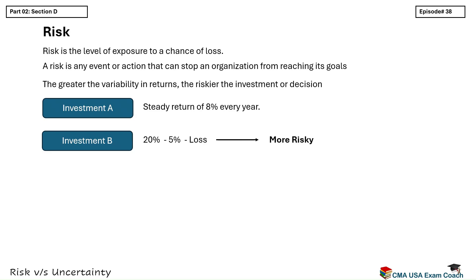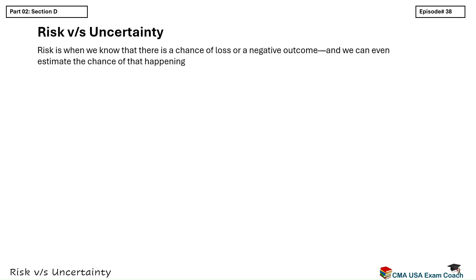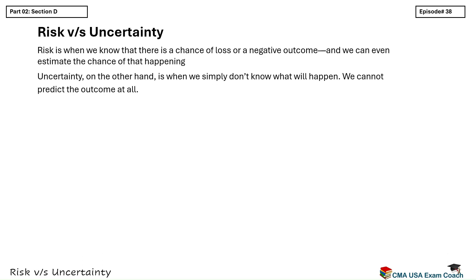Now that we understand what risk means, let's talk about something closely related but not exactly the same — called uncertainty. Many students think risk and uncertainty are the same, but they're not. Risk is when we know that there is a chance of loss or a negative outcome, and we can even estimate the chance of that happening. Uncertainty, on the other hand, is when we simply don't know what will happen — we cannot predict the outcome at all.